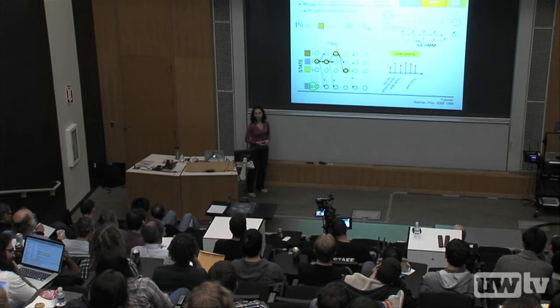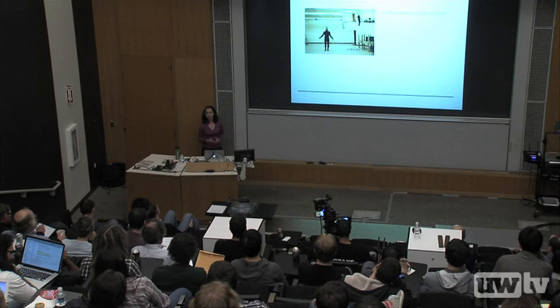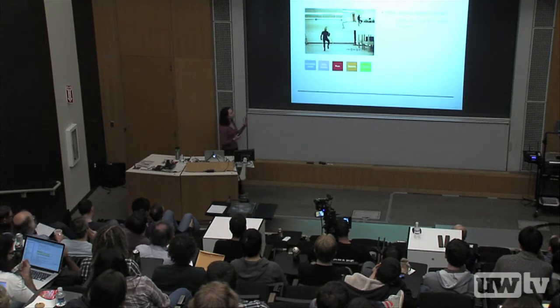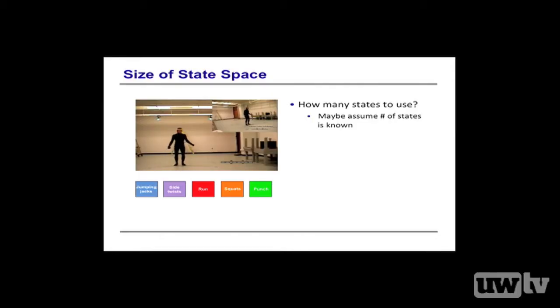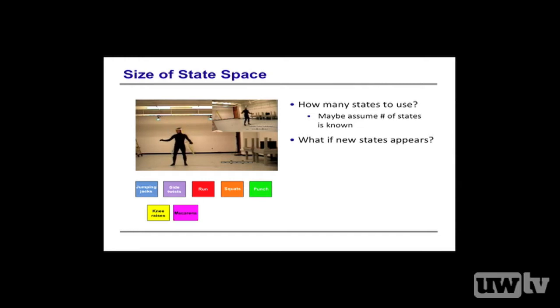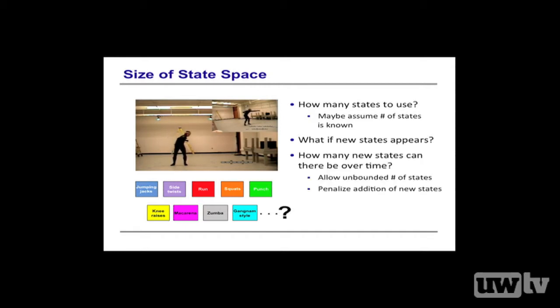So far I've assumed a fixed number K of possible states. This begs the question: how many states should we use? In the motion capture example, maybe we define a model with five states, but then this person starts doing knee raises — not included — so we add that state, re-estimate, then he does the Macarena, then Zumba, then Gangnam Style. How many new behaviors can appear? In any finite length time series there can only be a finite number of states, but it would be nice to allow for an unbounded number of possible states and encourage the use of a sparse subset, penalizing the addition of new states.